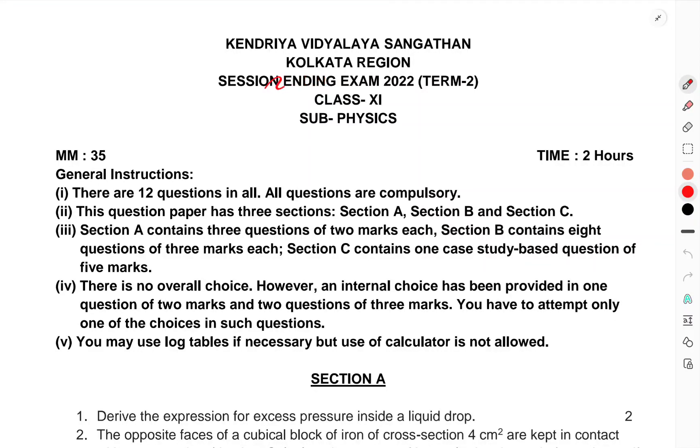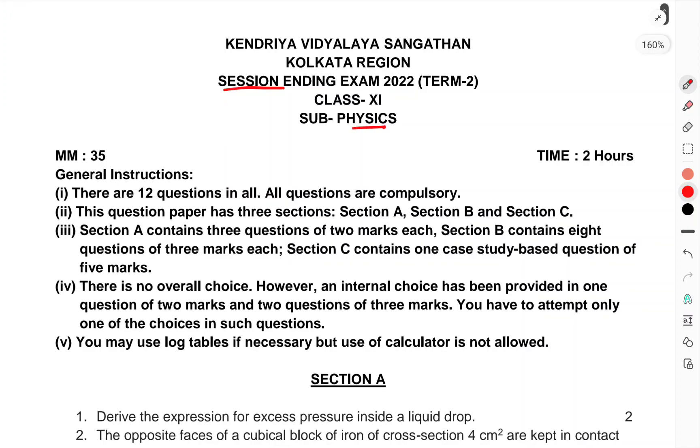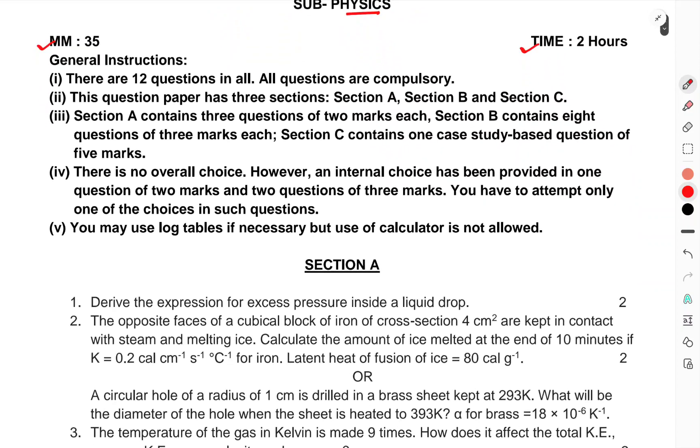Now we have to discuss the session ending examination, term 2, class 11th, subject physics, maximum marks 35. Our time is 2 hours. So let us start. We have to just read the questions only, so let us start.